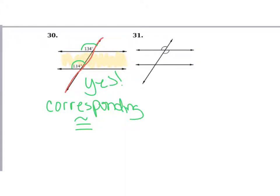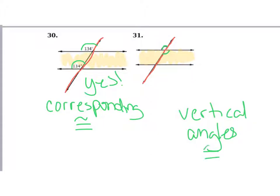Looking at the last one, the angles shown are called vertical angles and they are congruent. Vertical angles are always congruent — that's always true. But remember, the key thing is you need one angle from each intersection. Both of those angles are at the same intersection, so that is not enough information to prove parallel lines. You have to have one angle from each intersection.